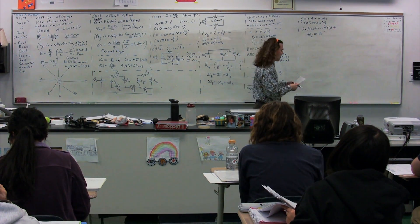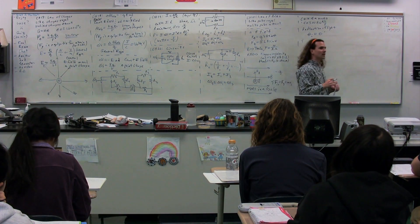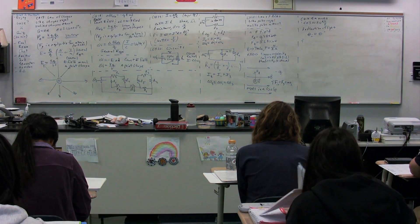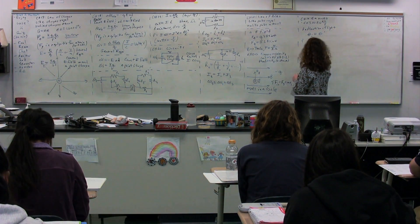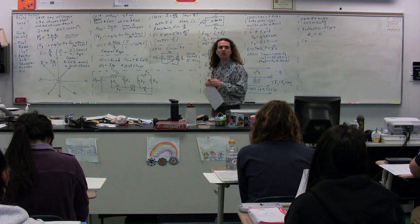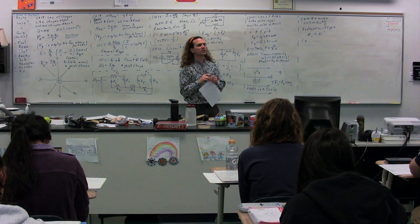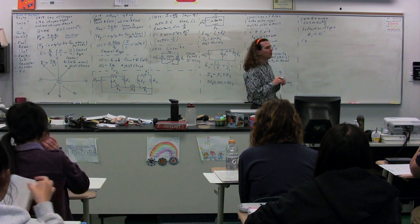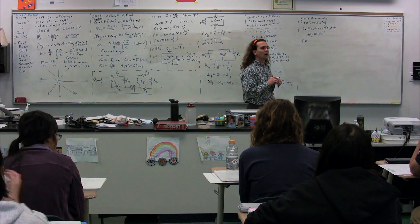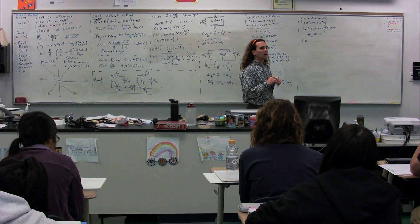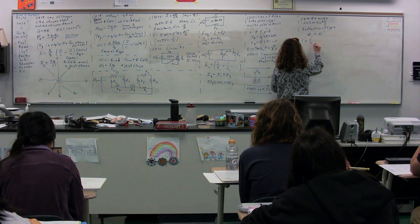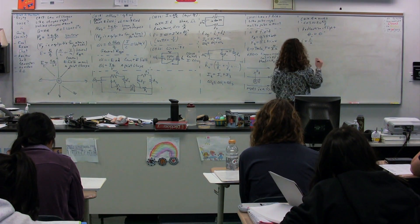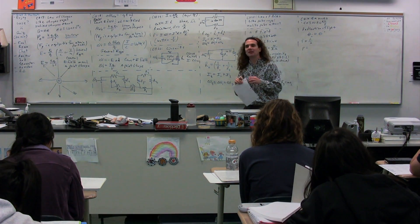We have all sorts of symbols in chapter 14. One of them is a lowercase f. What does the lowercase f stand for? The focal length. We have that in terms of capital R, the radius of curvature. What is the focal length in terms of the radius of curvature? It's the radius of curvature divided by two.